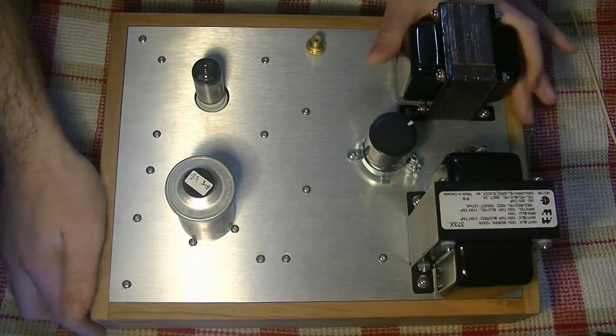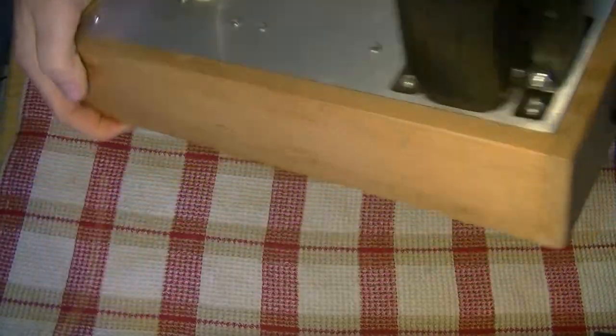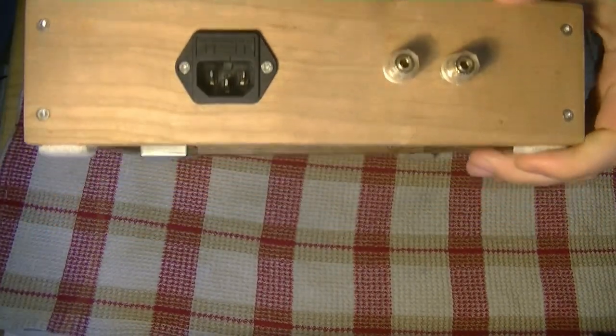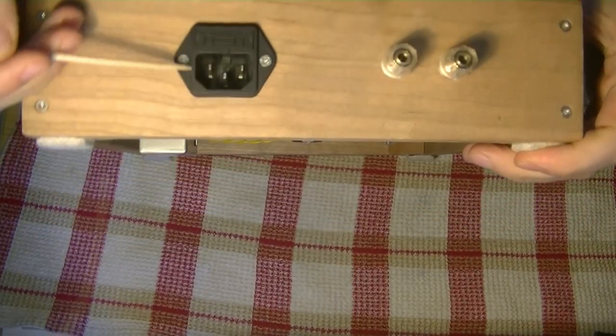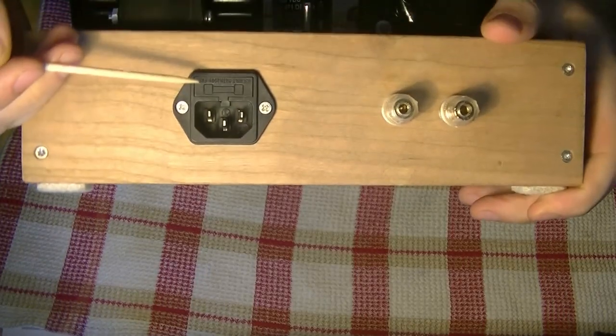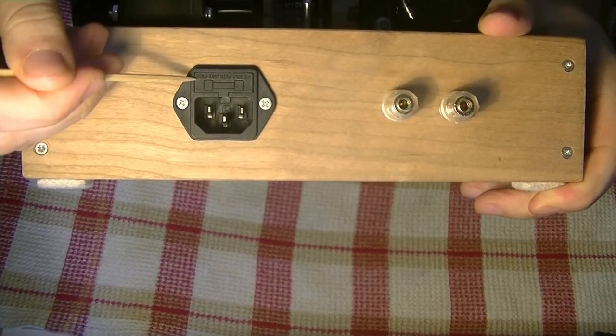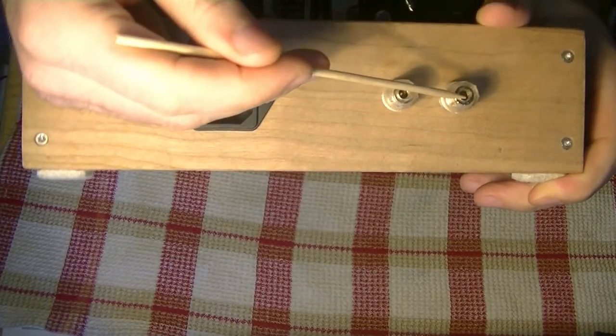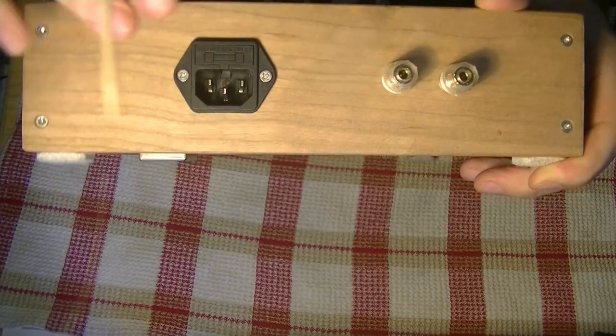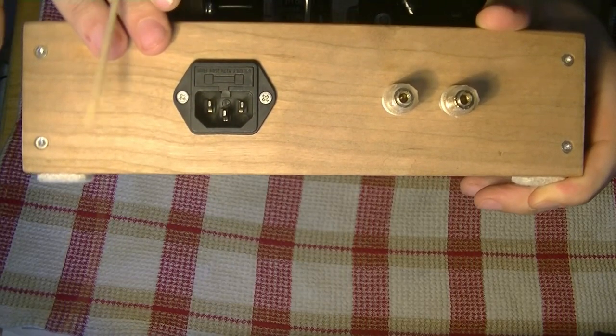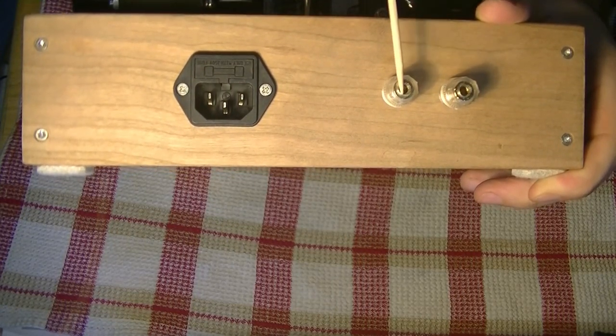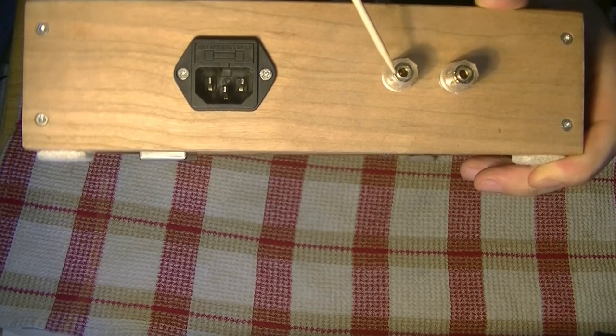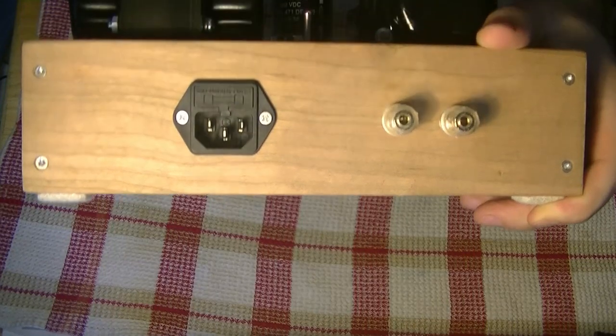Okay, so on the back, we have our standard IEC inlet. This is your power supply input with a built-in fuse holder. And we have our speaker jack outputs here. Now on this prototype number two, we only have two outputs. And that's because we were switching back and forth between the eight ohm and the four ohm tap on the output transformer.